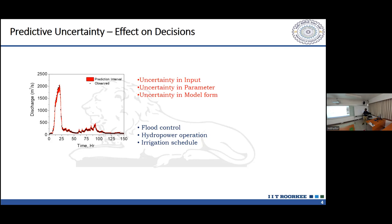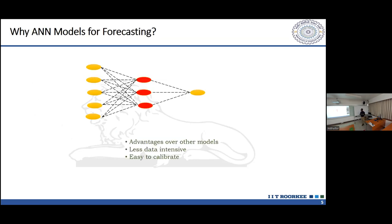We chose the ANN model because artificial neural networks have been widely used in the hydrological community and many times produce more accuracy than physics-based models. But the core hydrological community is still not ready to fully accept machine learning models because they don't capture the physics of the system — they just deal with data. Whatever data you give, it doesn't need to be a complete dataset. You can forecast streamflow from previous streamflow data alone using an auto-recursive process.